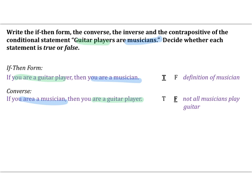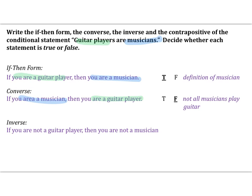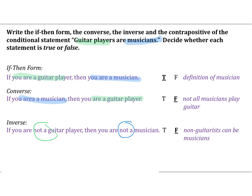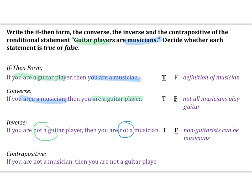The inverse — negate the hypothesis and conclusion of the original: if you are not a guitar player, then you are not a musician. This is false, because non-guitar players can be musicians. The contrapositive — the converse negated: if you are not a musician, then you are not a guitar player. This is true, just by the definition of a musician.